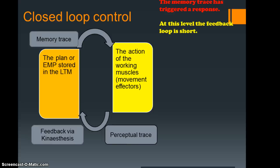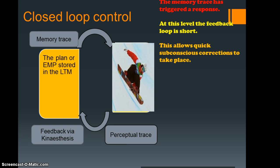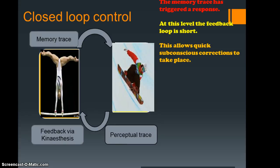Let's take this through in order. The memory trace has triggered the response from the muscle effectors. This loop is relatively short. Therefore, it allows for some quick and subconscious corrections to take place. Not huge corrections or adjustments, but just very quick ones via this feel, the kinesthesis. A really good example would be a downhill skier or a snowboarder going down the mountain making very minor adjustments as they're going along, usually subconsciously. Another example is somebody in gymnastics, making small corrections whilst performing the skill.